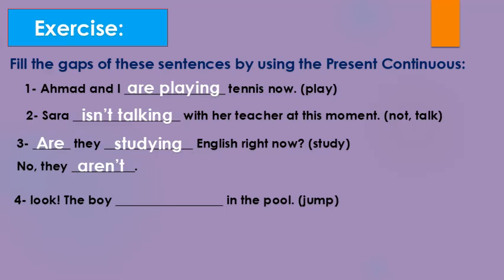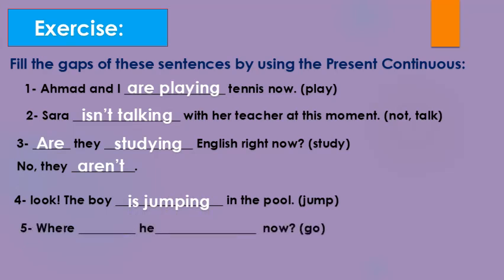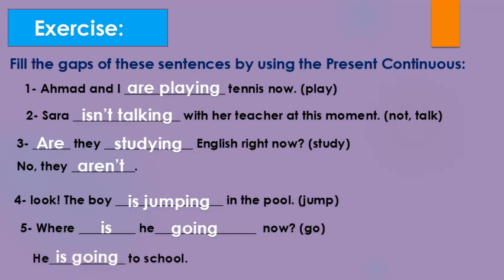Number four: Look, the boy __ (jump) in the pool. 'The boy' is singular, so: 'The boy is jumping in the pool.' Number five: Where __ he (go) now? This is a WH question, so we need a full sentence answer: 'Where is he going now?' Answer: 'He is going to school.' Okay guys, write them down in your notebook. Thank you for watching and I will see you very soon.